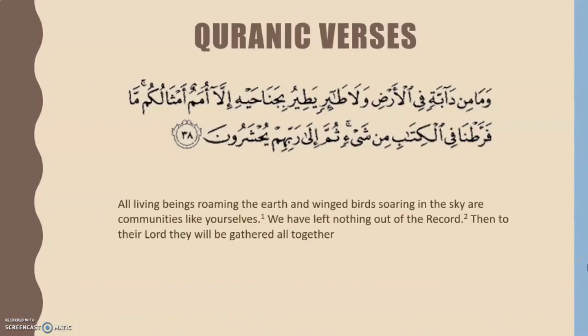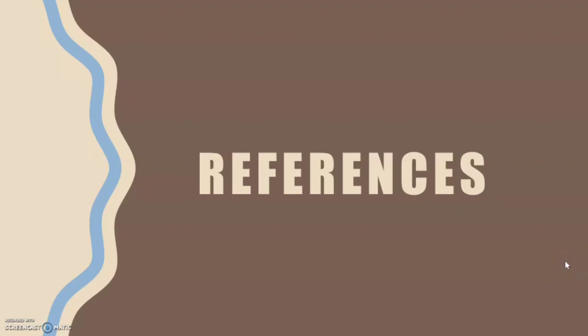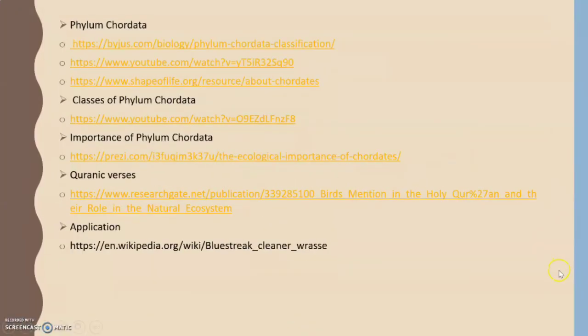The Quranic verse related to this process is Surah Al-An'am, Ayat 38: 'All living beings roaming the earth and winged birds soaring in the sky are communities like yourselves. We have left nothing out of the record. Then to their Lord they will all be gathered together.' From the phrase 'all living beings roaming the earth and winged birds soaring in the sky are communities like yourselves,' we can conclude that all organisms need each other in order to complete their needs. These are all the references we used to complete our assignment. That's all from us. Thank you.